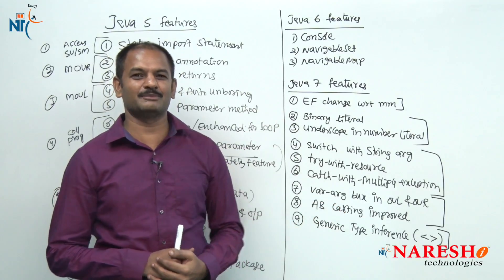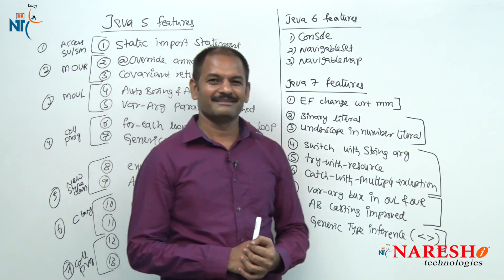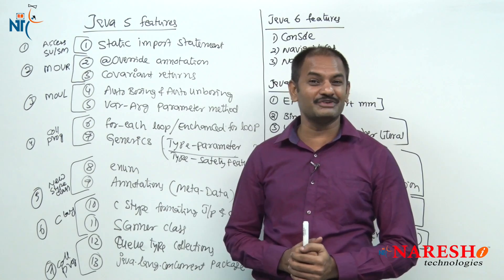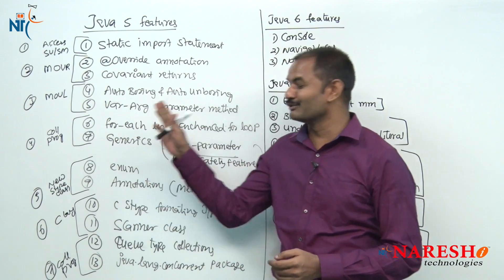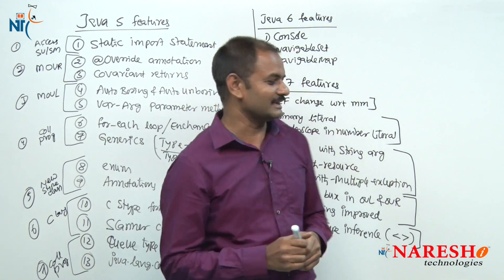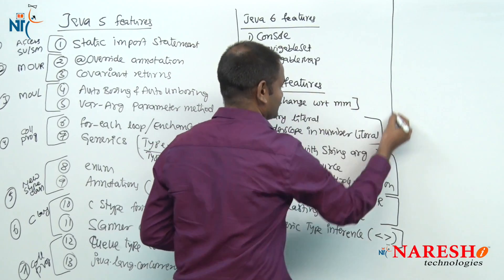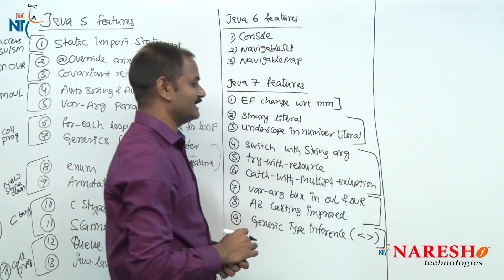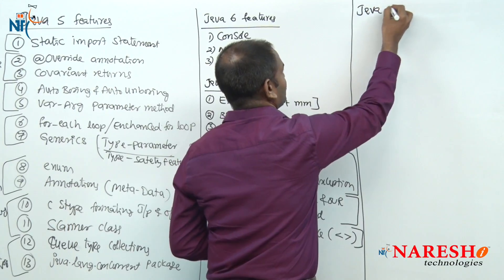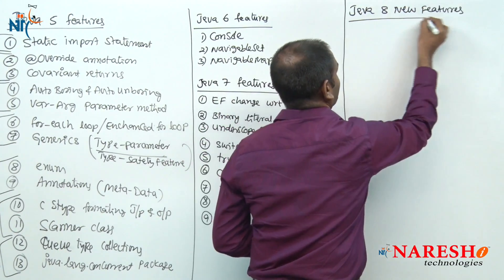These are the 25 features about Java 5, 6, 7. Fine, let me start the current discussion on Java 8 new features — these are all the old features. Now let us move to the really awaited features: Java 8 features. What are the different features added in Java 8 version? Java 8 new features — very interesting.